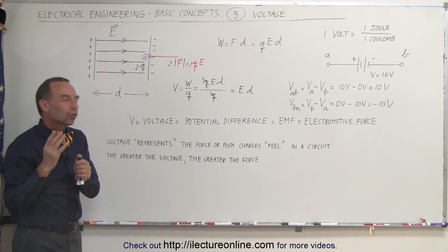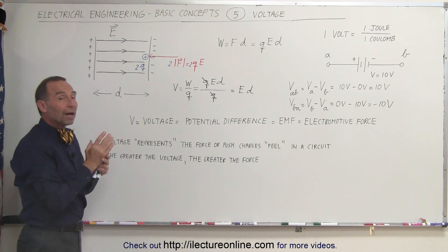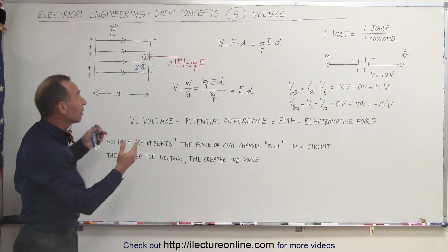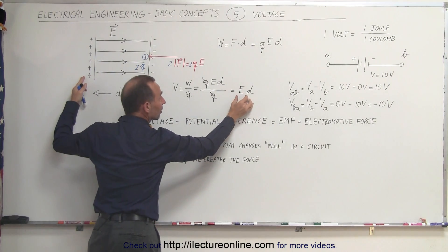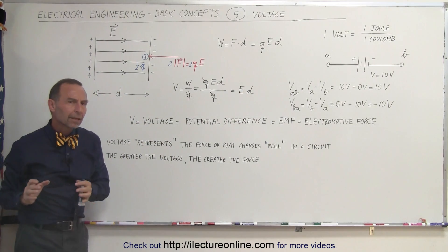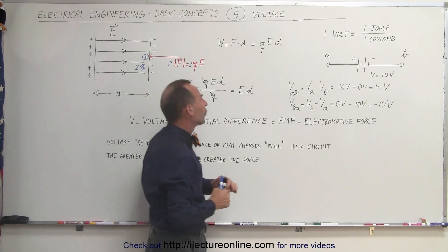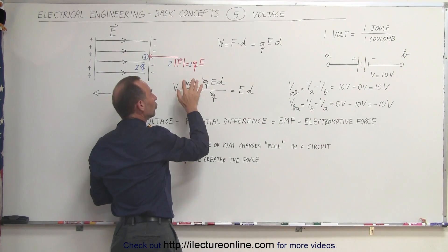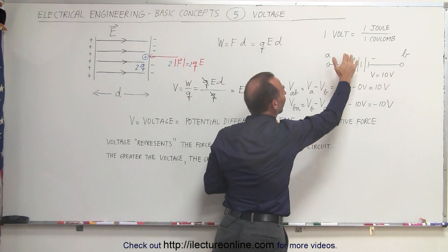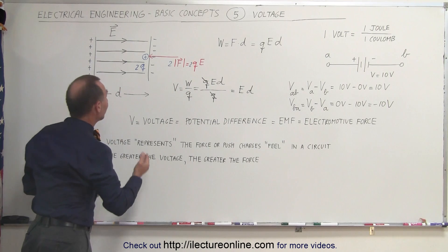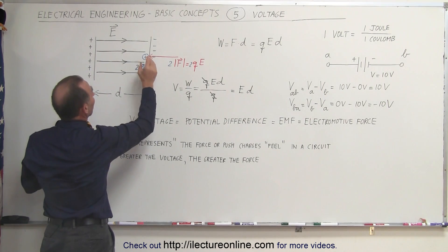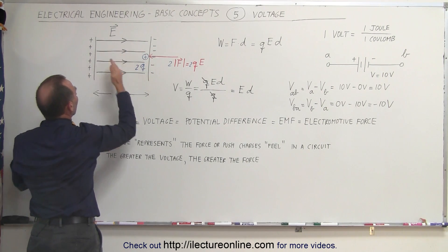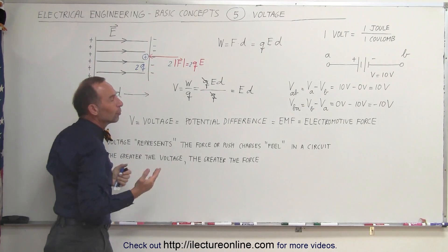The voltage can be thought of in two ways. It's equal to the amount of work we need to do to get a charge moved through an electric field divided by the size of the charge, or simply the potential difference — voltage — is equal to the strength of the electric field times the distance. A volt is therefore defined as a joule per coulomb. Work is in joules, charge is in coulombs. So if we have one coulomb of charge and it takes one joule of work to get across, the voltage between those two plates is equal to one volt.